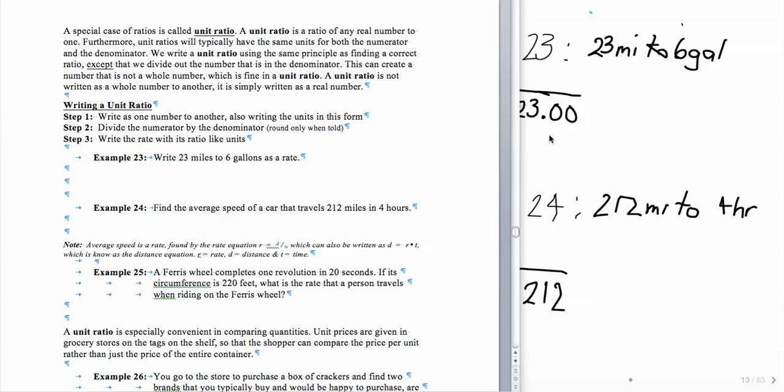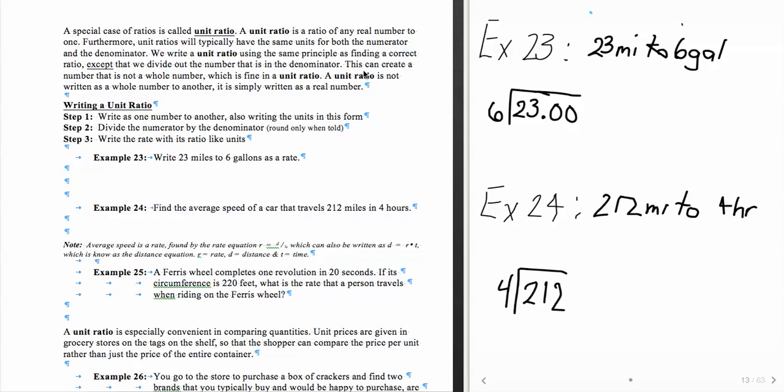We're going to do that with example number 23. So we're going to write 23 miles to 6 gallons. So as a ratio, of course, that looks like 23 to 6. And what we're doing in this case is a unit ratio. So we're going to divide out the denominator. So one way of making it look is doing that. And then writing this over here as something to 1. And this time units are actually important because it is a unit ratio. And it's the units that interest us.